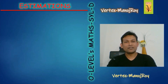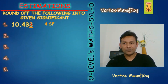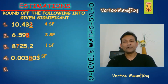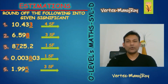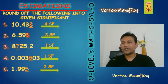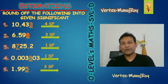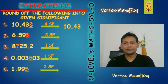After covering significant figures and estimation, let's do some examples. Round the following into the given number of significant figures. First: 10.433 into four significant figures. The fifth number — 3 — is selected to be dropped. Is this 3 more than five or less than five? Less than five, so just drop it. The answer is 10.43.